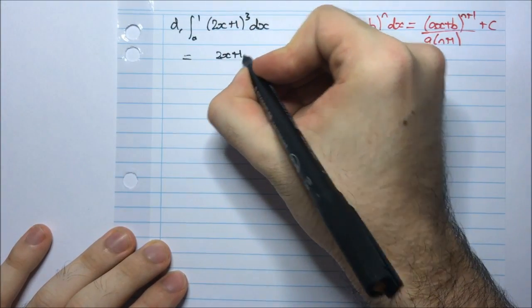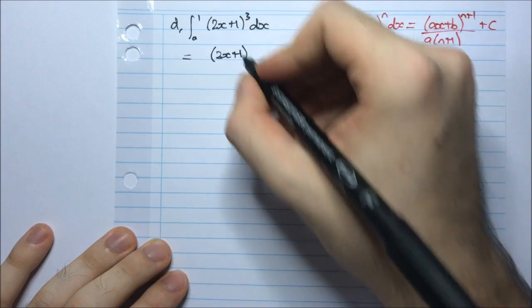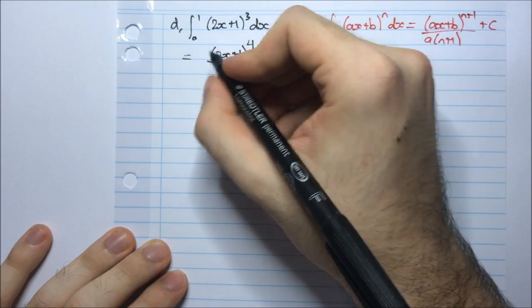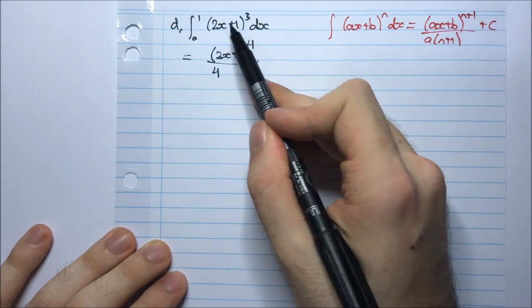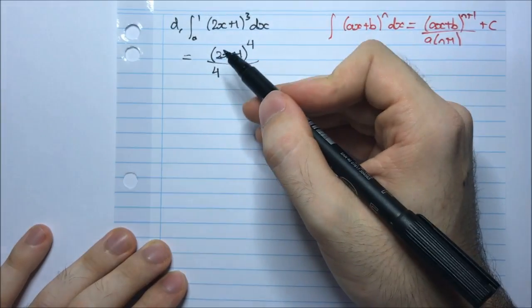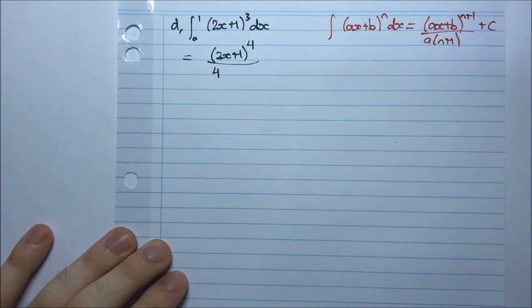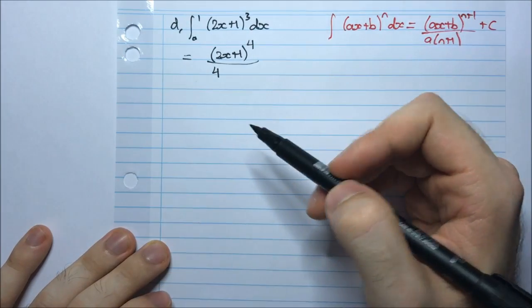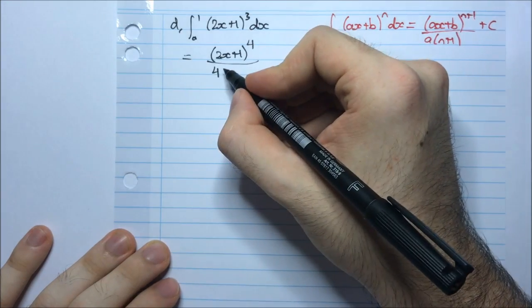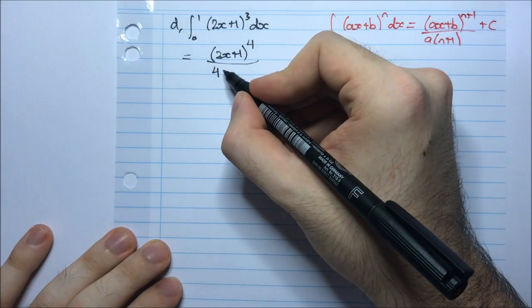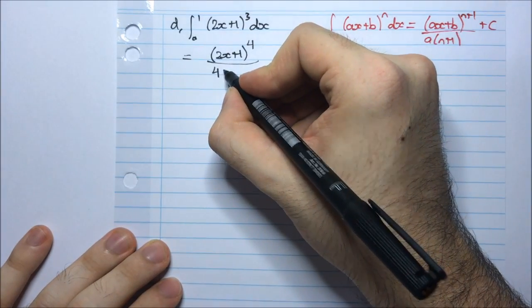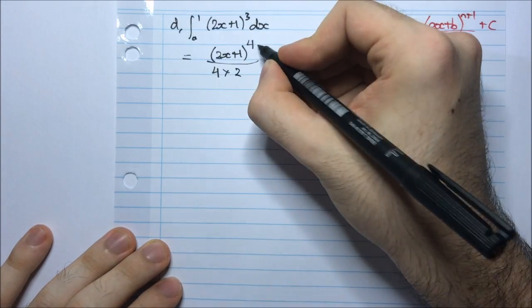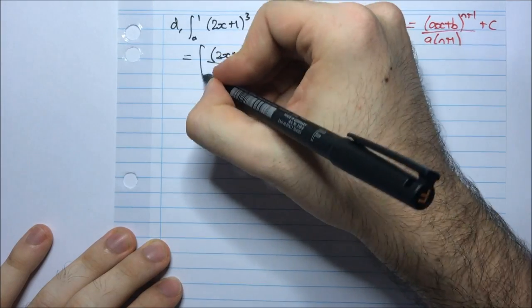Integrating this function, it's going to be (2x + 1). We add 1 to the power, so it's 4. We divide by the new power, and we also divide by the inside derivative of the linear function. If it was a quadratic, our derivative would involve something in terms of x, so we can't divide by that because it's not constant. That's why it only works with linear functions. So dividing by the inside derivative is 2. And I'm evaluating between 0 and 1.